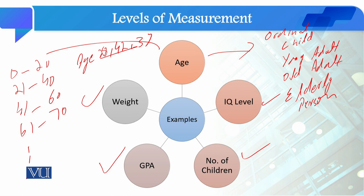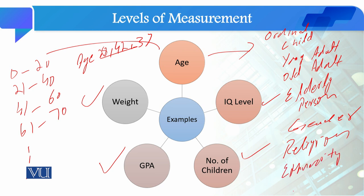For variables that can be measured at the continuous level, as a social scientist, we should try to measure them at the continuous level. However, some variables cannot be measured at the continuous level — for example, gender can only be measured at the nominal level, religion can only be measured at the nominal level, and similarly ethnicity and nationality can only be measured at the nominal level.